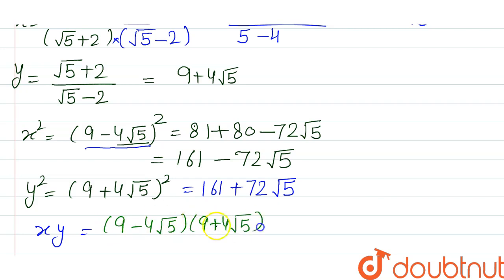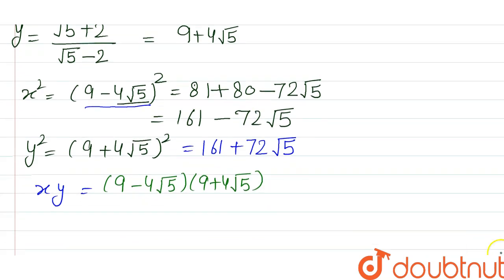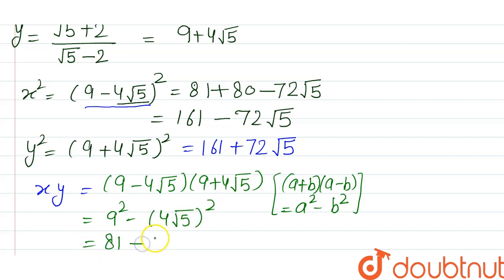So xy: (9 - 4√5) and next is (9 + 4√5). Now (a+b)(a-b) identity is there. Both brackets are same, sign difference only, so it will be like a² - b². So it can be written as 9² - (4√5)².